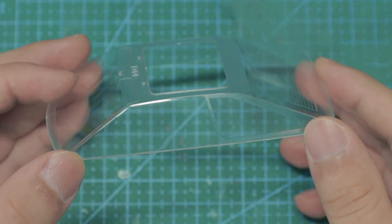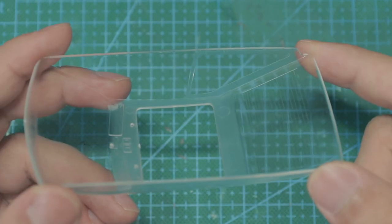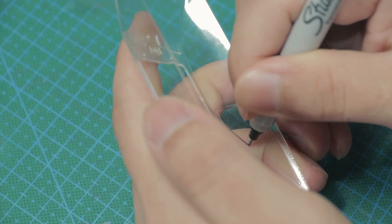Aoshima kits usually have the window masking templates for the builder, but unfortunately this one doesn't, so I have to make my own using masking tapes.